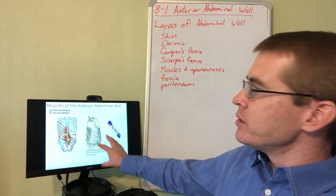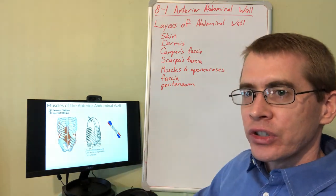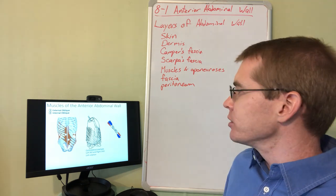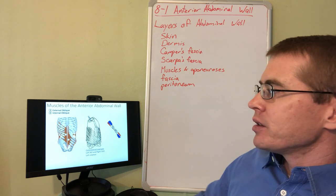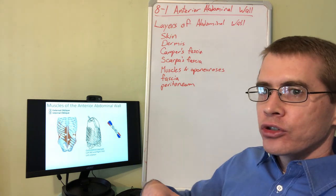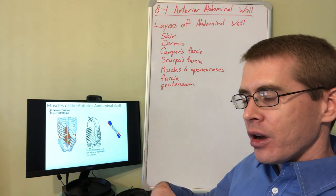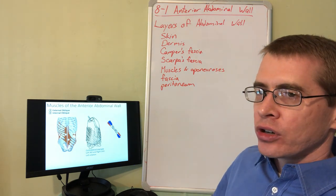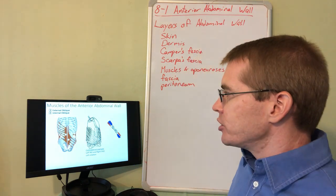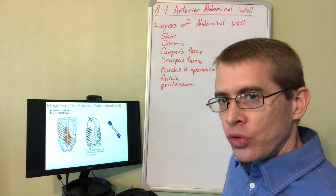Another slide emphasizes trunk rotation with activation of these different muscles and shows how the orientations of the muscle fibers result in that rotation. The rule of thumb is that when you're contralaterally contracting the external and internal oblique, the trunk rotates toward the side of the internal abdominal oblique. For instance, if you contract your right internal abdominal oblique and your left external abdominal oblique, you rotate to the right — whatever side the internal oblique is on, that's the direction of rotation.